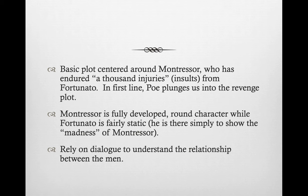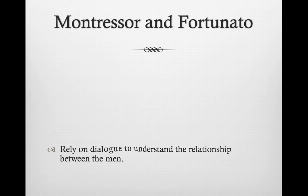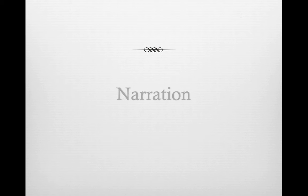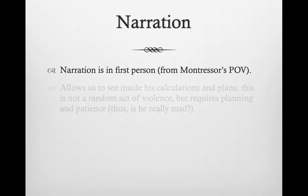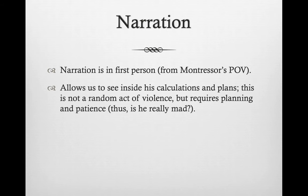We rely on dialogue to understand the relationship between the men because we have a narrator who is essentially an unreliable narrator. The narration is first person, so we see Montresor's point of view, but we don't know how reliable it is. We see inside his calculations and plans and everything he does to make this final act of revenge take place.